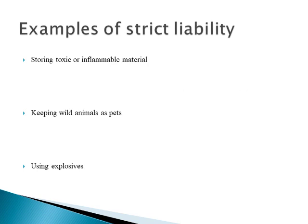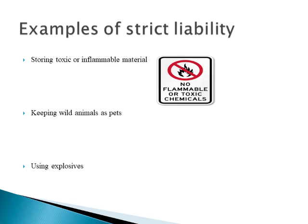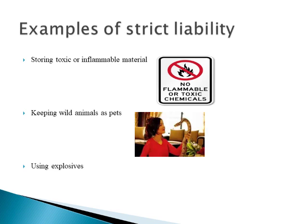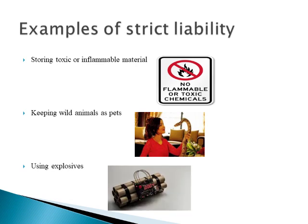In tort law, strict liability holds that some activities are so dangerous that no amount of care could eliminate the risk of injury. If a person indulges in very dangerous activities, there is always a risk of injury, and if anyone is harmed because of those dangerous activities, that person will be strictly liable even if they were not negligent or did not intend to cause harm. Examples of such activities include storing toxic or inflammable material, keeping wild animals as pets, and using explosives.